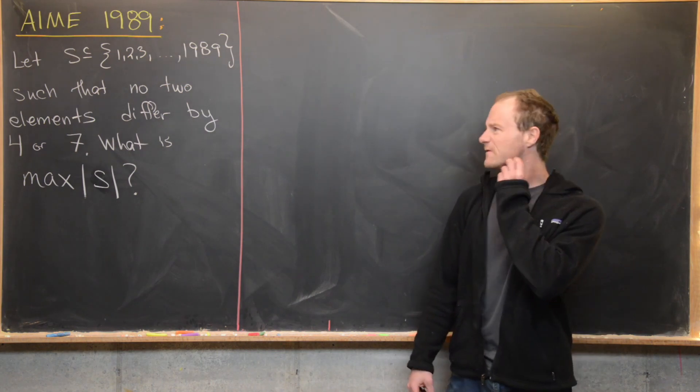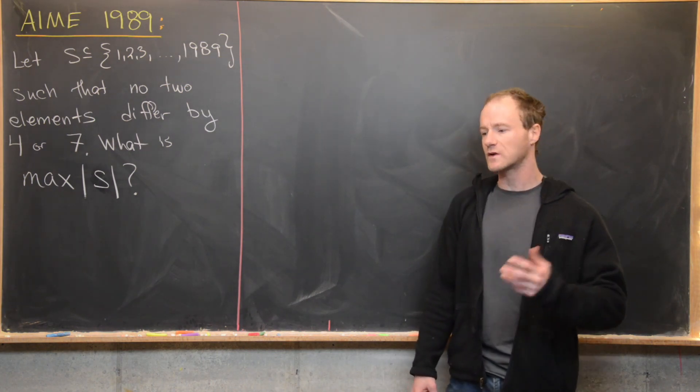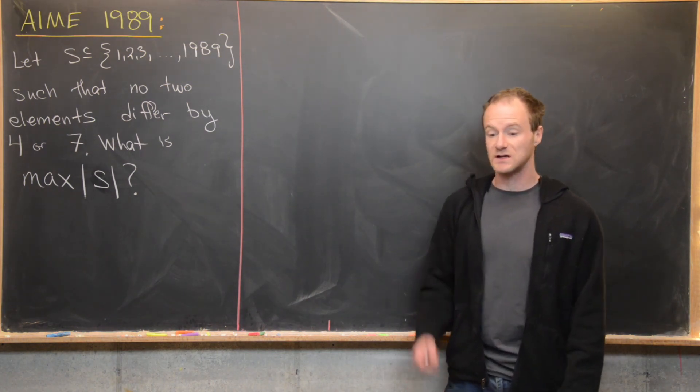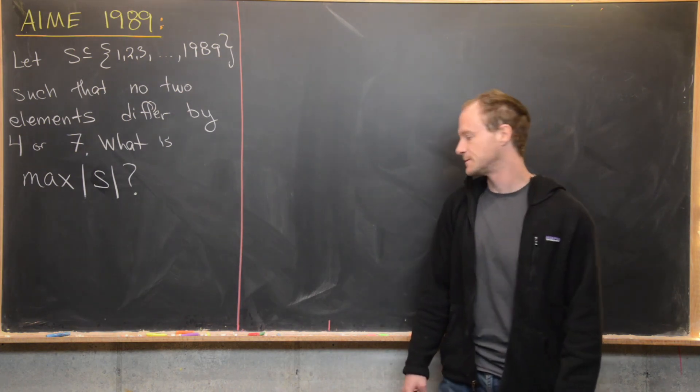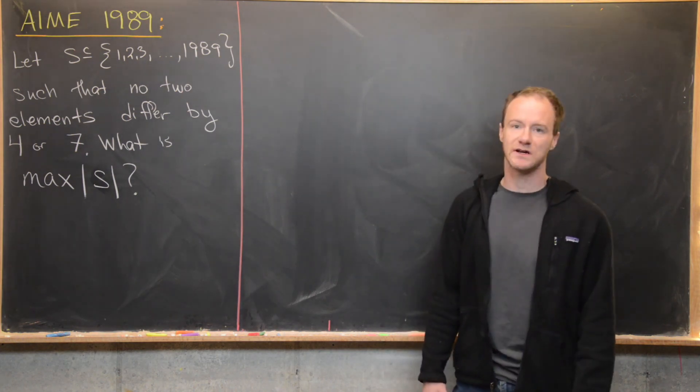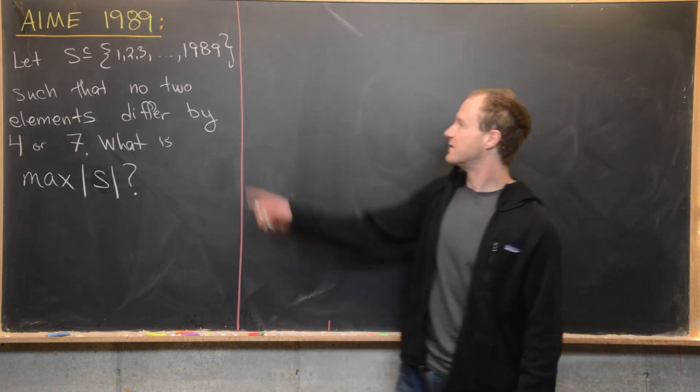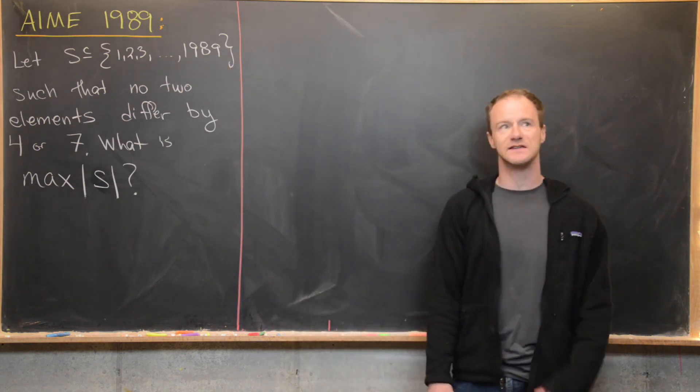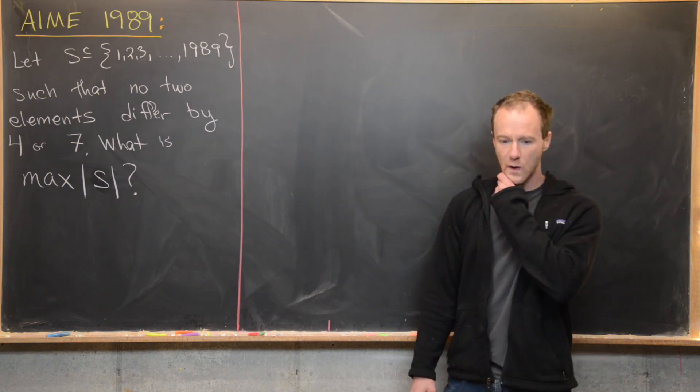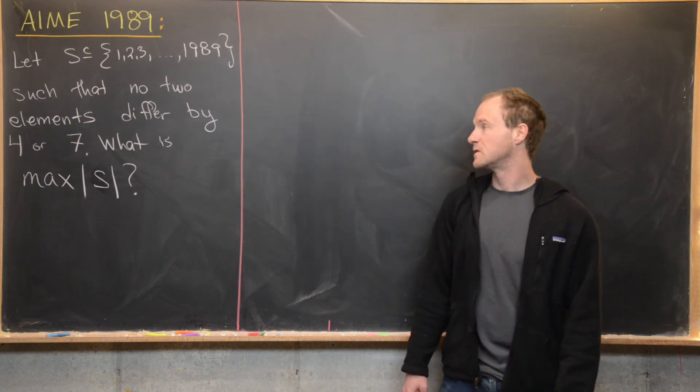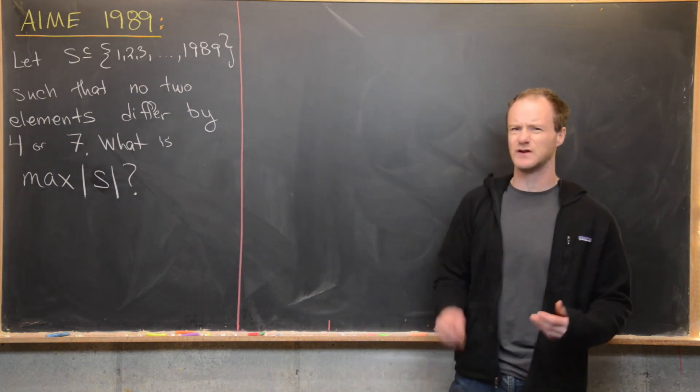So maybe the first thing to do here, which is a really good first step for lots of contest type problems, is to look at a simpler case. And the simpler case that we'll look at here will be if this set is the set 1, 2, 3, up to 11. And you might say, well, where do we come up with 11? Well, 11 is 4 plus 7, so that gives you kind of a hint there.